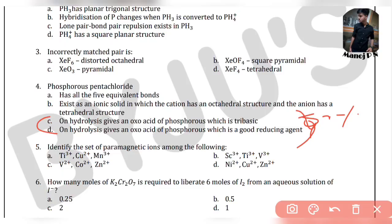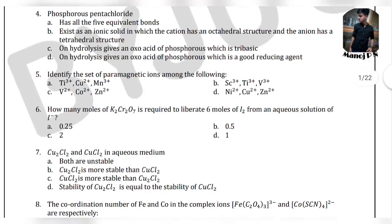On hydrolysis, phosphorus pentachloride gives an oxo acid of phosphorus which is tribasic. Next question: identify the set of paramagnetic ions among the following — Ti3+, Cu2+, Mn3+, Sc3+, Ti3+, V3+, V2+, Cu2+, Zn2+, Ni2+, Cu2+, Zn2+.